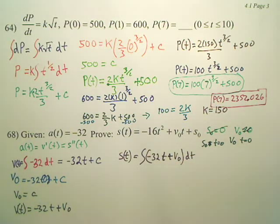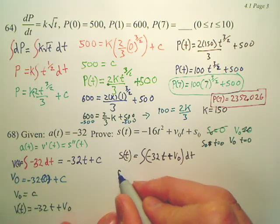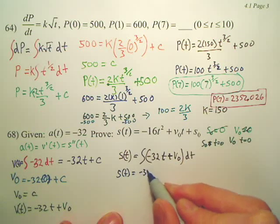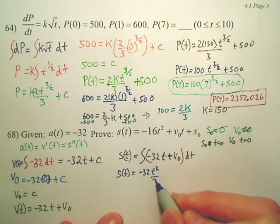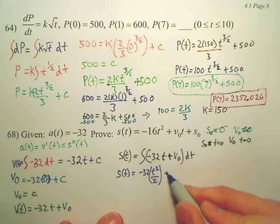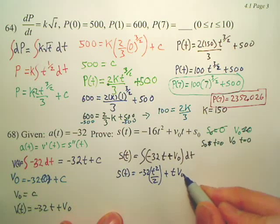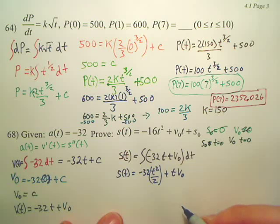So, I'm going to integrate this to get to my position function. s of t is going to be negative 32t squared divided by 2 plus t v of 0, or v of 0t. I should have probably read it the other way.